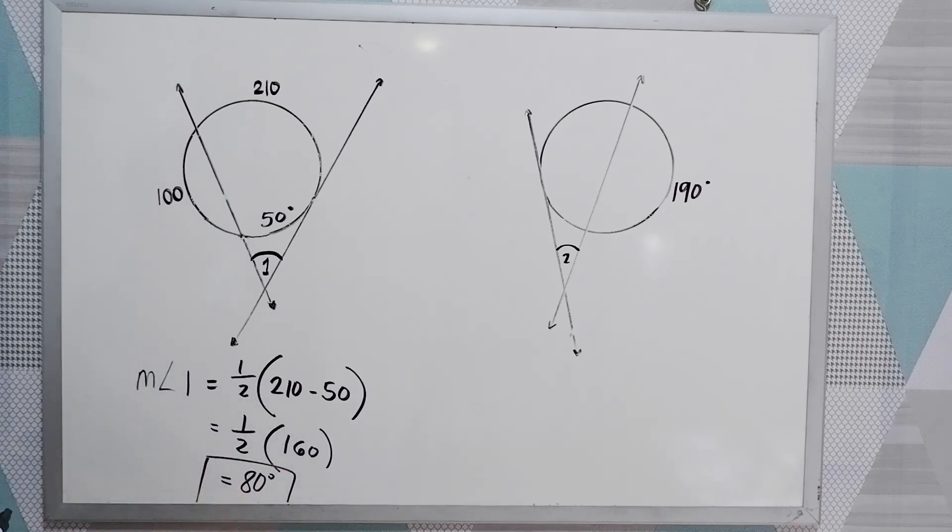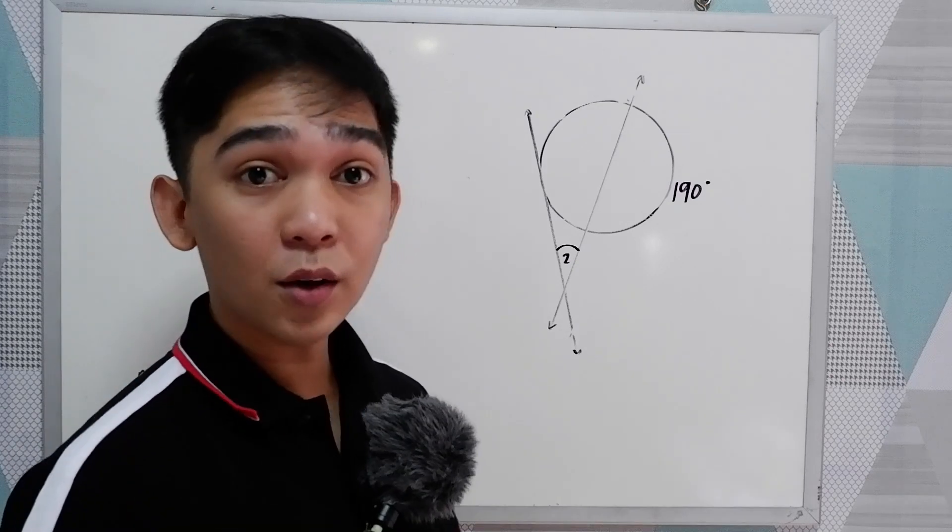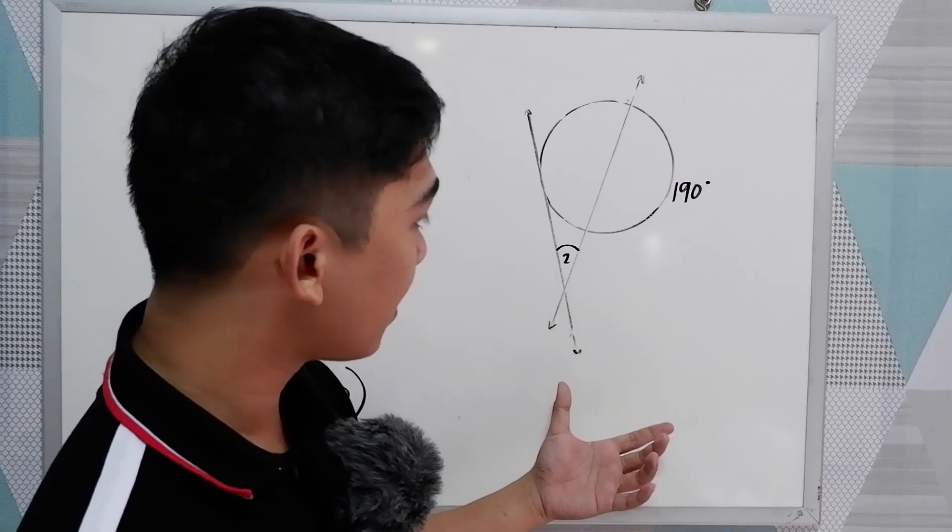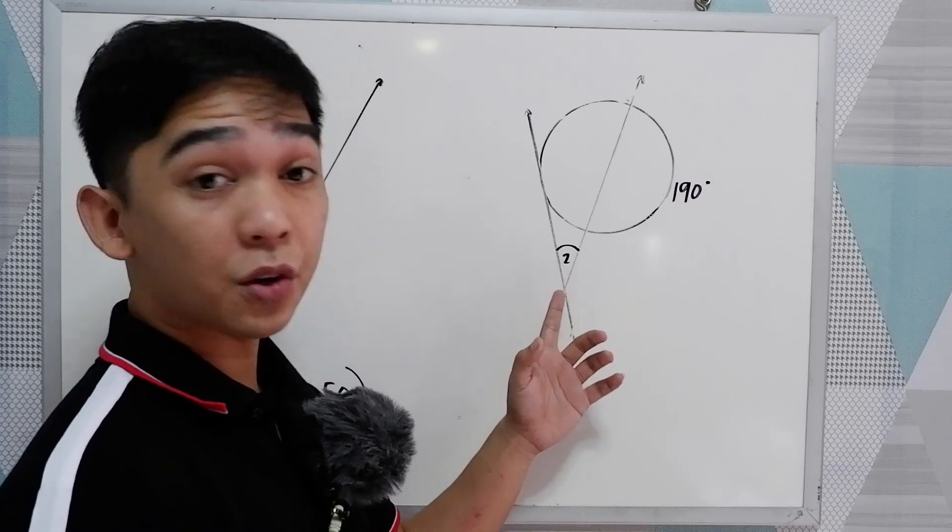That will be the measure of angle 1, half of 160. Now let's proceed in our second example, or second problem. We're going to find the measure of angle 2.